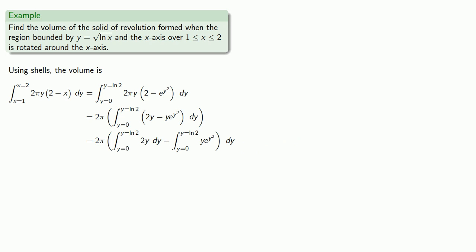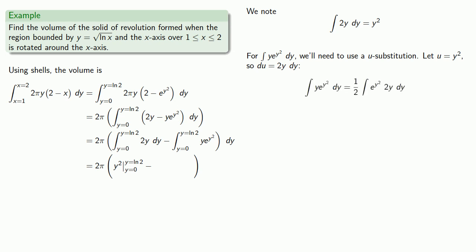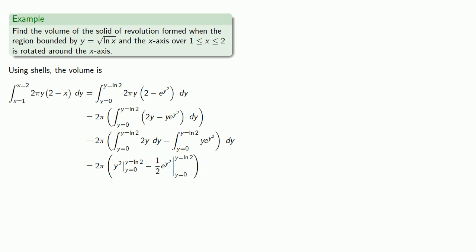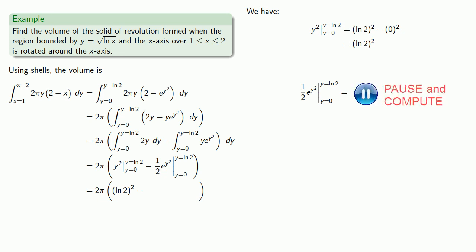We can evaluate the antiderivative separately. The antiderivative of 2y is y squared. For the other antiderivative, we'll need to use a u-substitution. So we'll let u equals y squared. Making the substitution, then putting everything back. And we'll evaluate. Y squared from y equals 0 to y equals square root log 2 gives us log 2. One half e to the y squared from y equals 0 to y equals square root log 2...